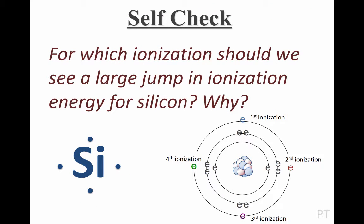Now you try an example. There's a picture showing Bohr's model of a silicon atom, and a shorthand notation called a Lewis dot diagram which shows just the valence electrons as dots. Let's use what we know about silicon to figure out which ionization will show a large jump in ionization energy. The first ionization requires some energy, the second requires even more, and the third and fourth take still more energy. But it's on the fifth ionization that there's a huge jump, because on the fifth ionization we pull off an electron that is much closer to the nucleus — a core electron.